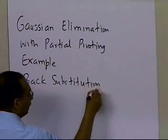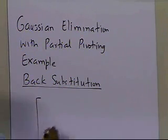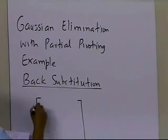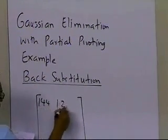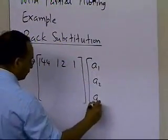At the end of the forward elimination steps, we got the equations in matrix form. The coefficient matrix has 144, 12, 1 in the first row, with variables a1, a2, a3.